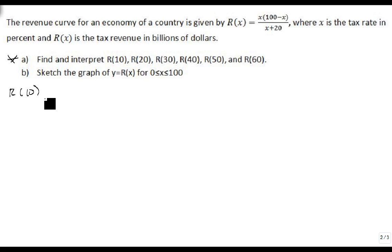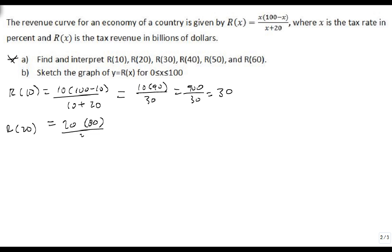We're going to plug in 10, which gives us 10 times 100 minus 10 over 10 plus 20. I'm going to skip a little bit because this becomes 10 times 90 over 30, which is 900 over 30, which is 30 billion. R(20) is 20 times 80 over 40, which is 1,600 over 40, which is 40 billion dollars.